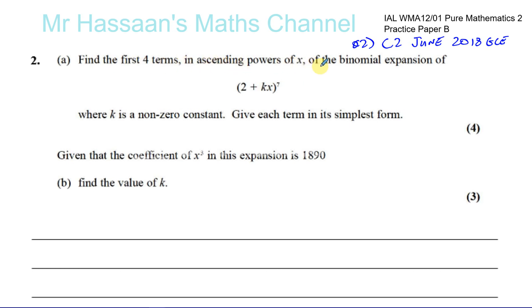Part A says: find the first four terms in ascending powers of x of the binomial expansion of (2 + kx) to the power of seven, where k is a non-zero constant. Give each term in its simplest form. Our answer is going to be in terms of k.